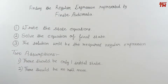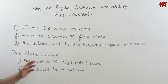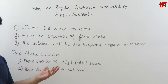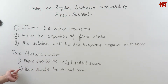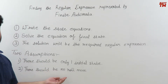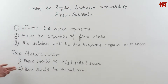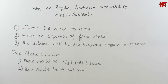To follow these three steps, there are two assumptions you have to keep in mind. First, there should be only one initial state in the finite automata — there cannot be more than one initial state. Second, there should be no null moves. If there are null moves in your finite automata, first remove those null moves. If these two assumptions are satisfied, then you can easily make the regular expression from the given finite automata.